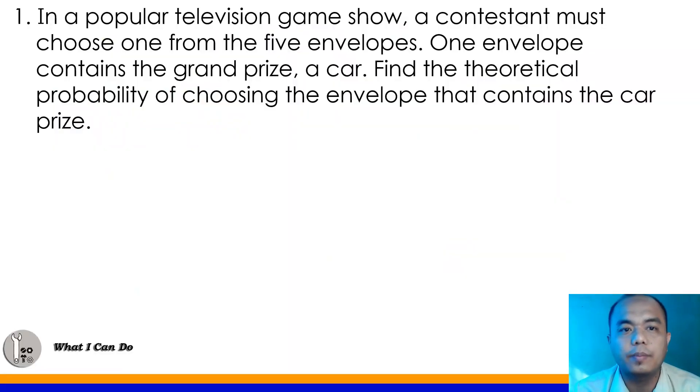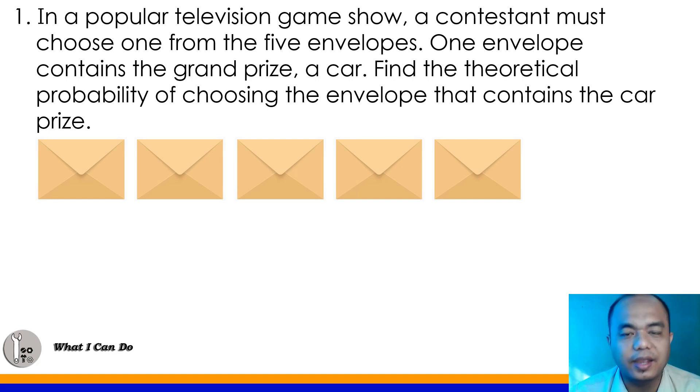Let's proceed to the What I Can Do part of your module number 1. In a popular television game show, a contestant must choose one from the 5 envelopes. One envelope contains the grand prize, a car. Find the theoretical probability of choosing the envelope that contains the car prize. These are the envelopes class, there are five. Now, what is the probability of getting the grand prize car? How many envelopes have the car grand prize? Only one. We'll have 1 in our numerator. And how many total envelopes? Yes, 5. Now, how many percent is 1/5 class? Let's convert 1/5 to percent form. Very good. We have 20%. That means, there's a 20% probability that the contestant will get the envelope containing the grand prize car.